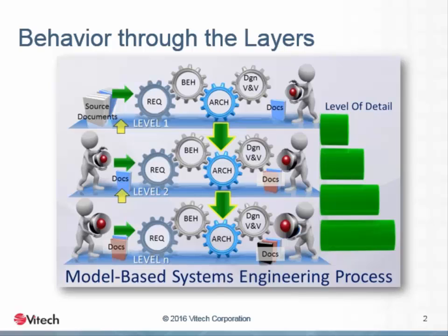The system behavior is also known as the functional or logical architecture. The logical description, often referred to as the functional description, tells us what the system will do. The requirements are answered by the system functions that meet them. Thus, the logical or functional description of the system being designed is a direct answer to the needs stated in the requirements.